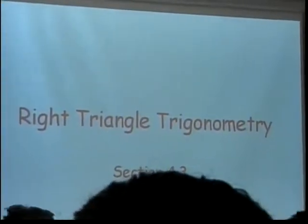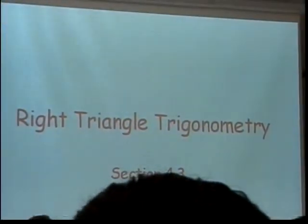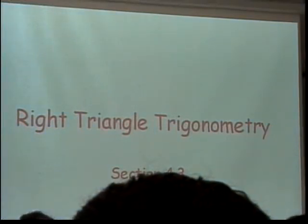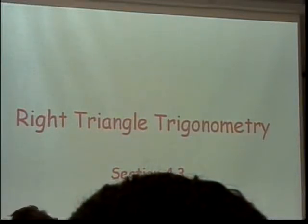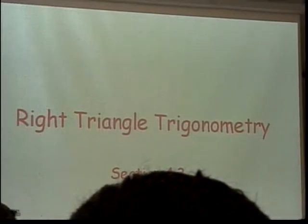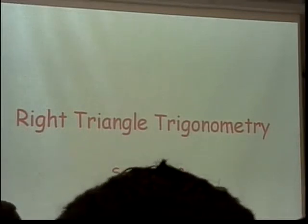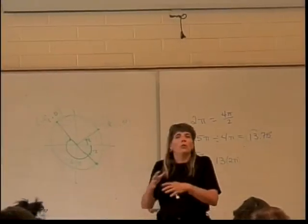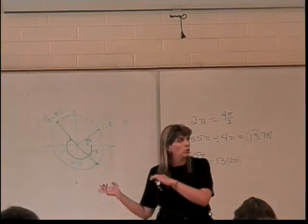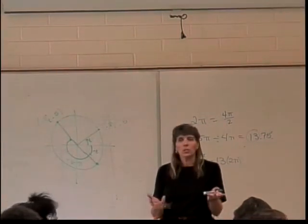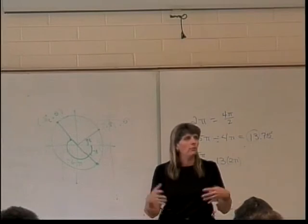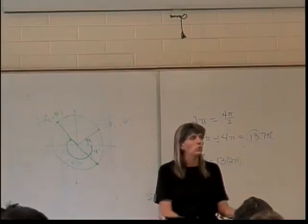We're covering trig relative to right triangles, and I want to warn you about something. How many of you bought the book? How many of you actually look at the book? For those of you who look at the book, stop it for this section. This book, in this particular section, seems to think you need to learn a new formula in order to do trig on right triangles. Personally, I don't think we need a new formula every time we get a new situation where we can use an old formula.